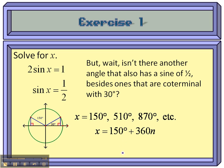If you're going to do this in radians, we've got 5π over 6.